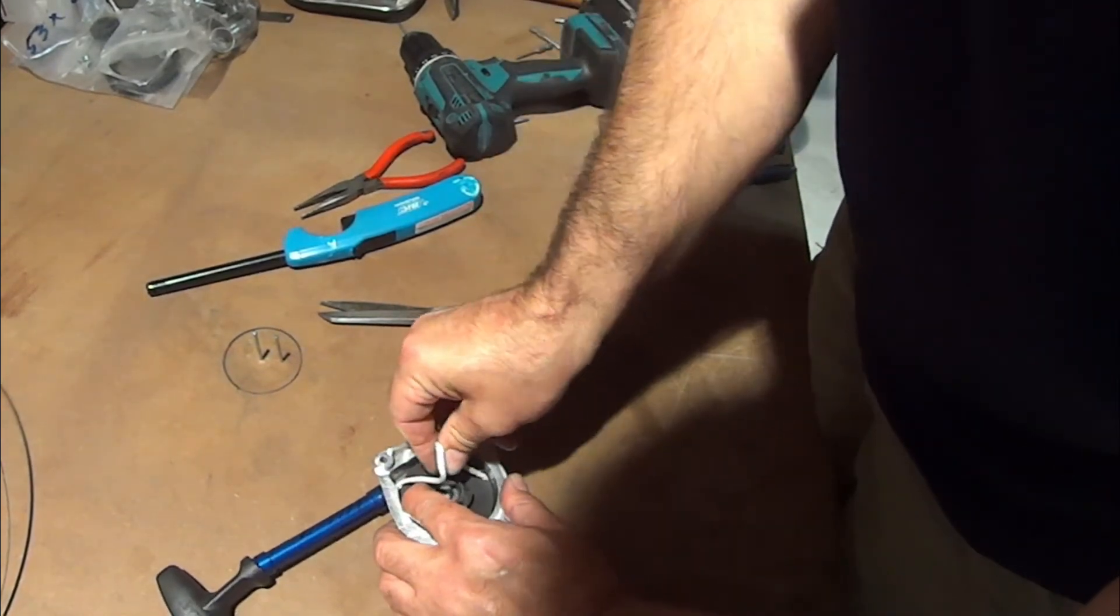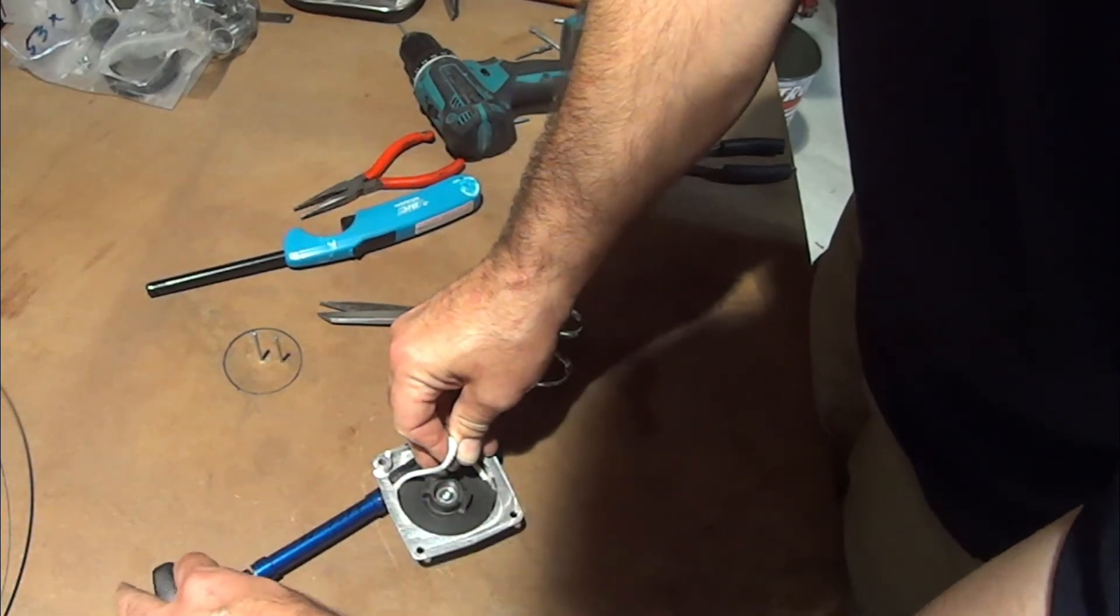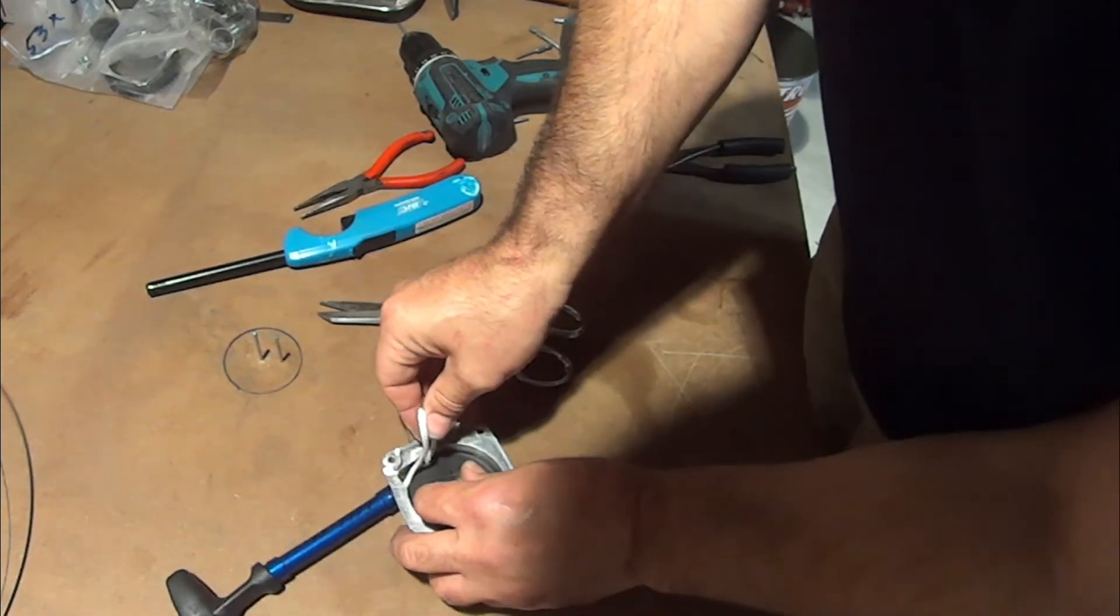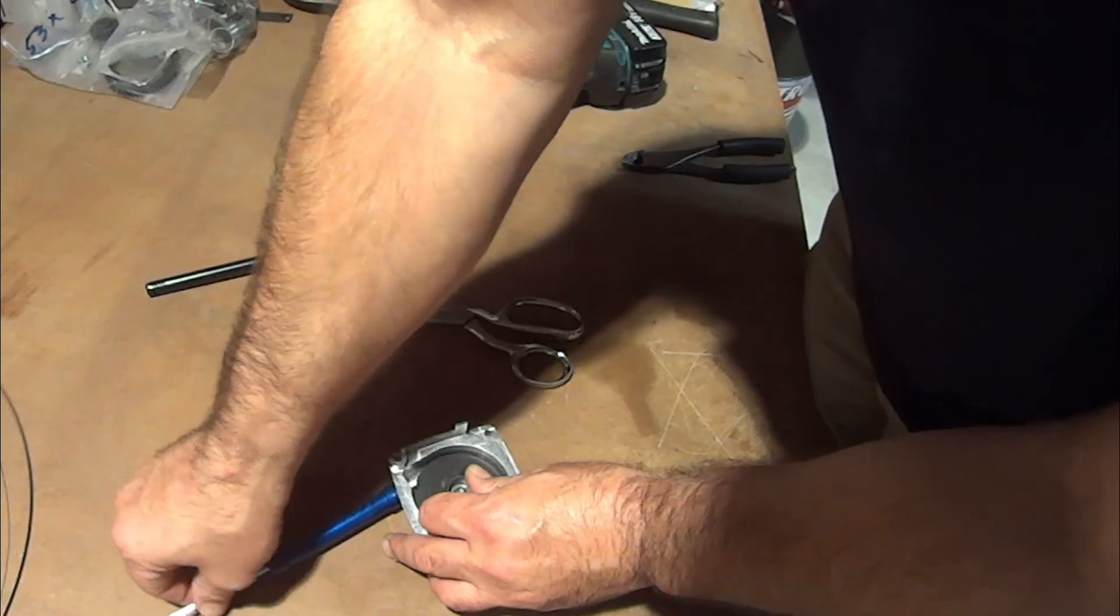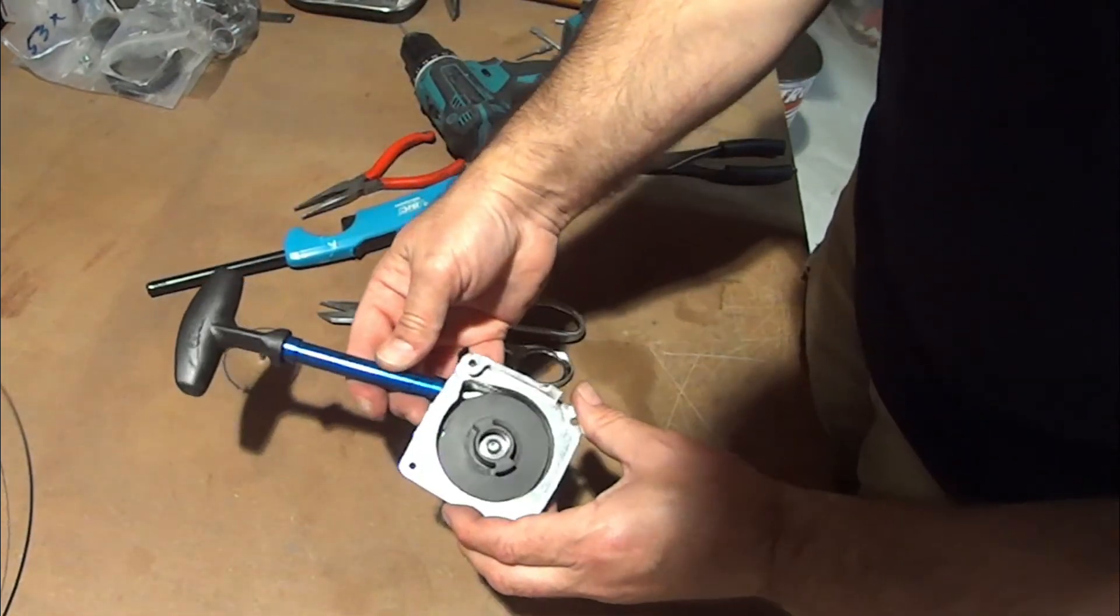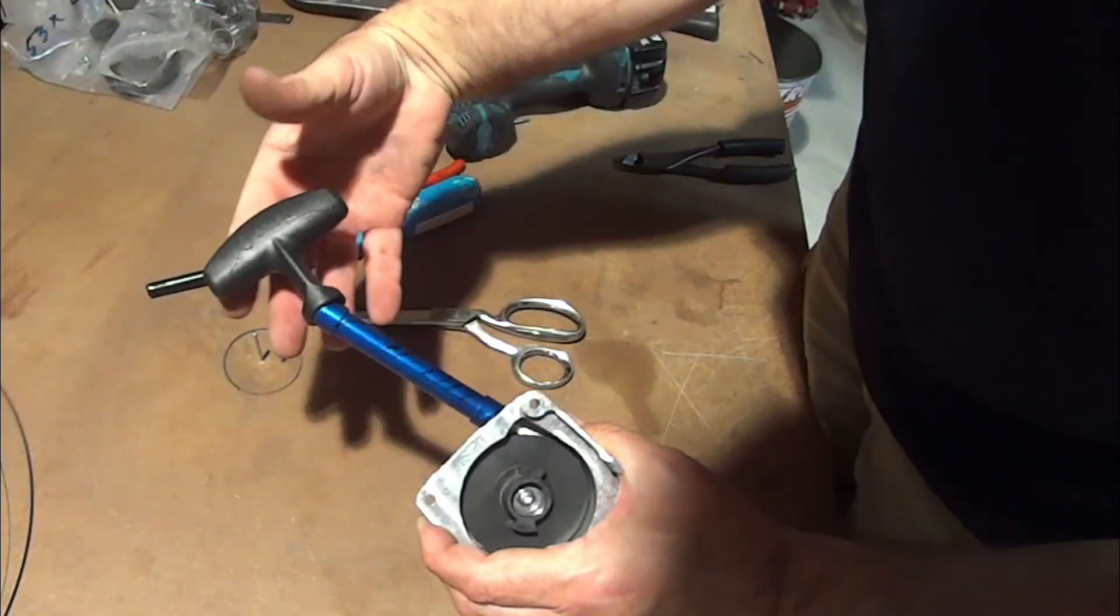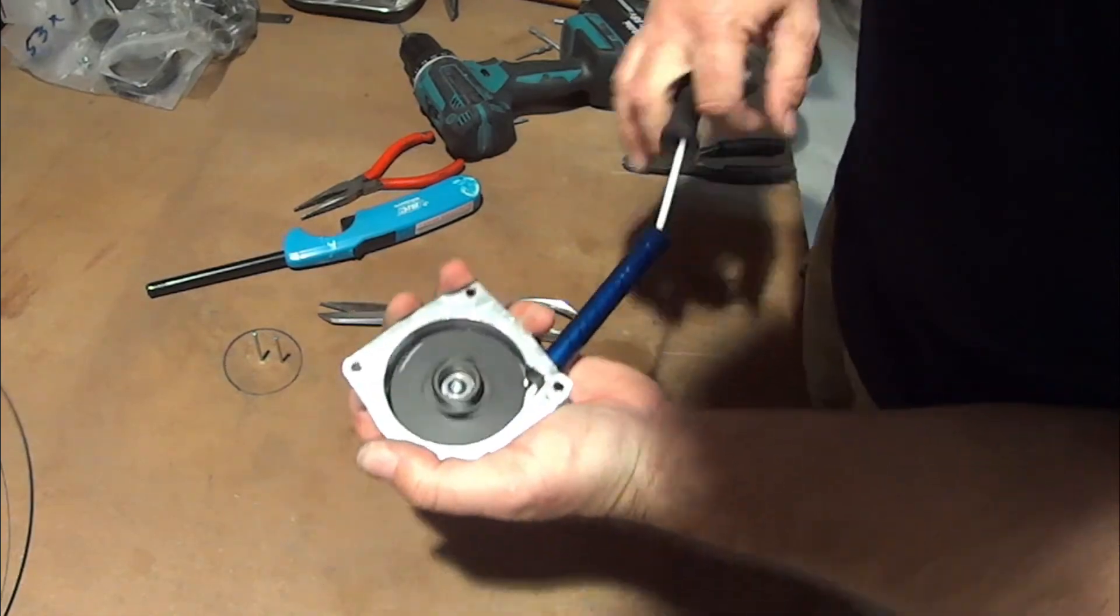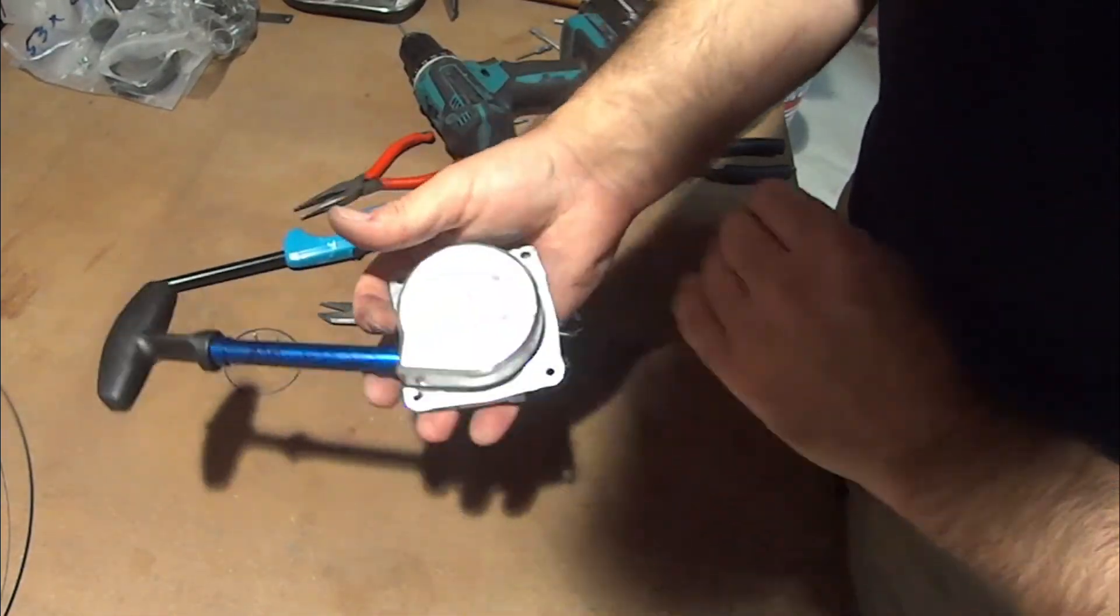Now how many times? That's a personal preference. You want this taut. It doesn't need to be super, super tight. I'm pretty confident that's good. So what I'm going to do now is I'm going to pull that through, release it. Now your pull start is good. Proper length, check your fitment, no binding. And there you go. That's how to build a pull start.